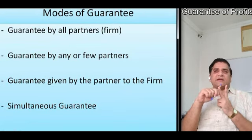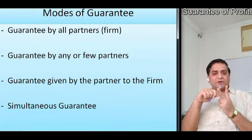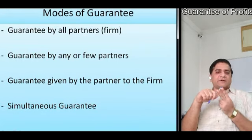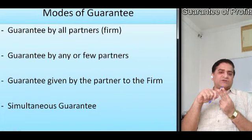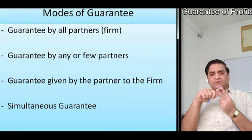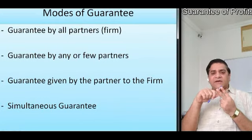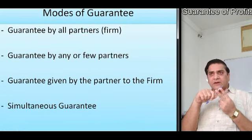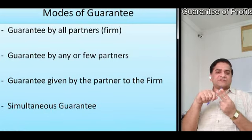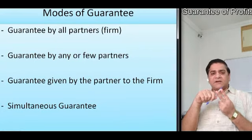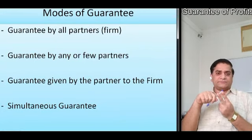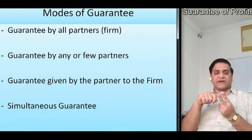The second case would be the Guarantee by selected or a few partners — it can be 1, 2 or 3, not everyone. The ratio of sacrifice to be made in case of deficiency would be given, or else the profit sharing ratio would be considered. In this case, the partner who has given the assurance would have his capital account or share of profits reduced to that extent.